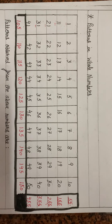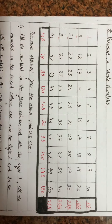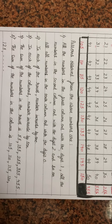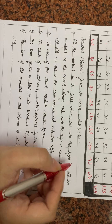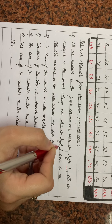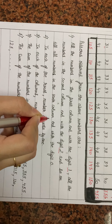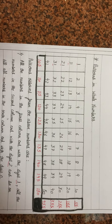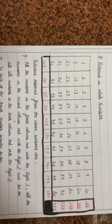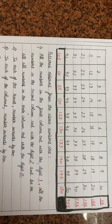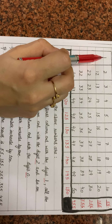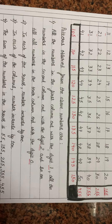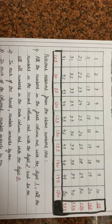Pattern observed from the above numbers: All numbers in the first column end with digit 1, all in the second column end with digit 2, and so on, till all numbers in the tenth column end with digit 0. In each row, numbers increase by 1. In each column, numbers increase by 10.